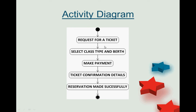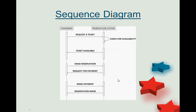The activity diagram shows the step-by-step functionality. When a customer requests a ticket, they select the class type — economy, business, or first class — then choose their seat number. Once everything is confirmed, the customer makes a payment. After payment is confirmed, ticket confirmation details are provided and the reservation is made successfully, generating an e-ticket.